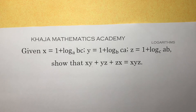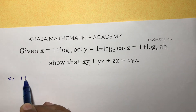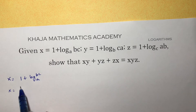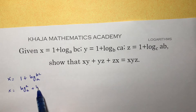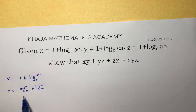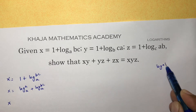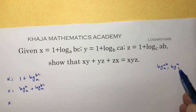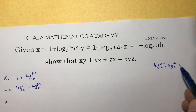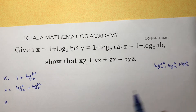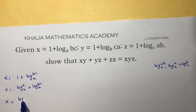First, take x equals 1 plus log BC to the base A. The value 1 can be written as log A to the base A, plus log BC to the base A, because the logarithm of a number to the same base is 1. Now applying the logarithm of a product — log AB to base X equals log A to base X plus log B to base X — we get log ABC to the base A.